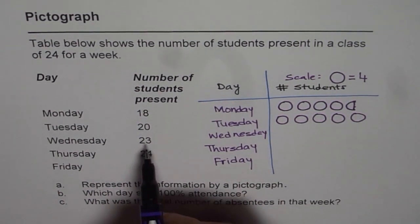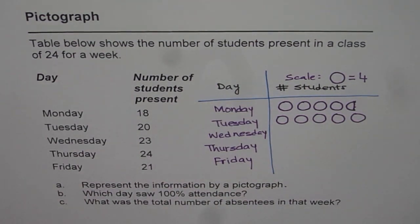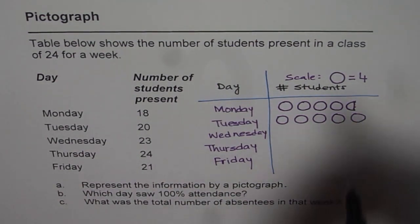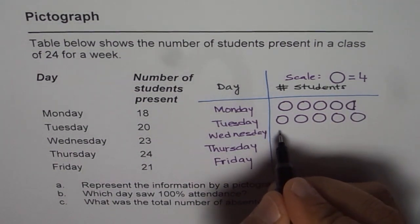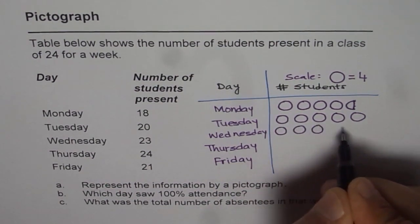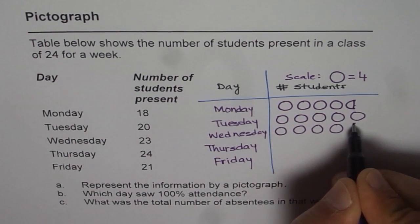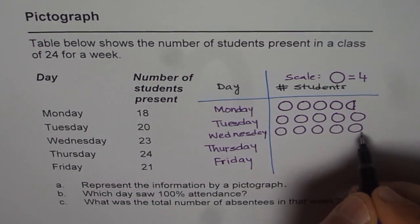23. 23 means 3 more than 20. How will you represent 3 with the circle of 4? Well think about it. Let me first draw 20, that means 5 circles. So I will have 5 first: 1, 2, 3, 4, 5, and now 3 more.